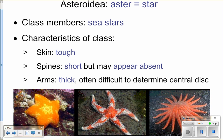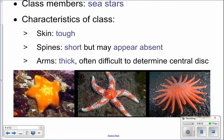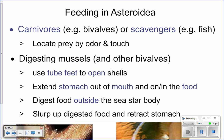Asteroidea — 'aster' means star — so these are the star animals: sea stars. Characteristics of this class: they have tough skin, and their spines are short and may look internal, making the animal appear bumpy. Their arms are very thick, and it's hard to determine where the central disc starts and ends compared to the arms — unlike the brittle star where the central disc is very well-defined.